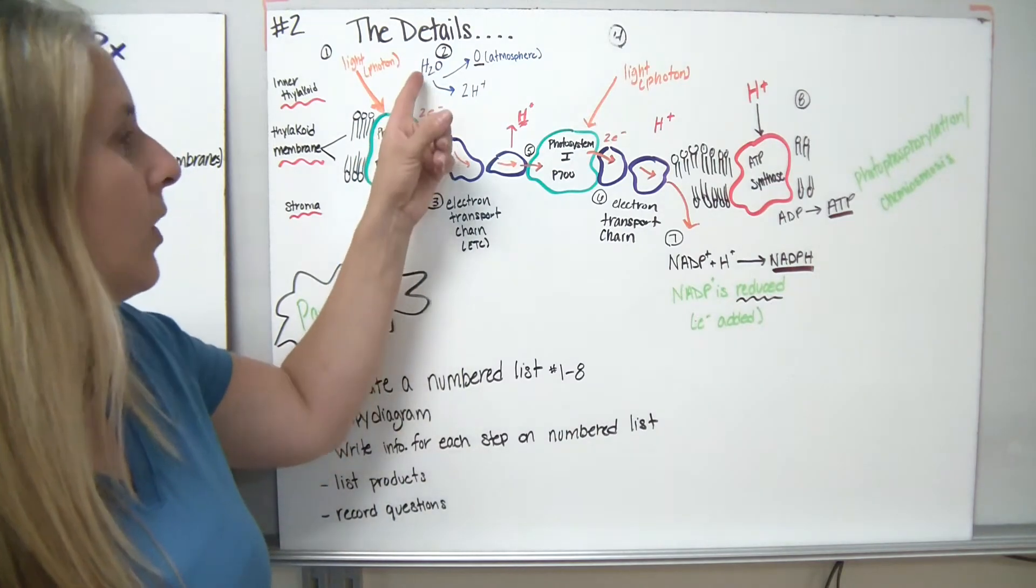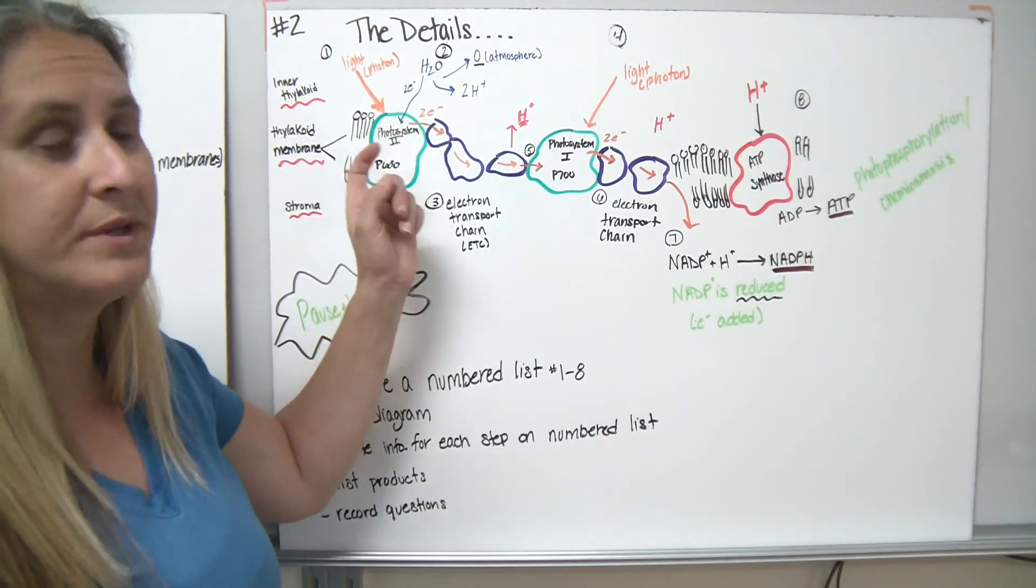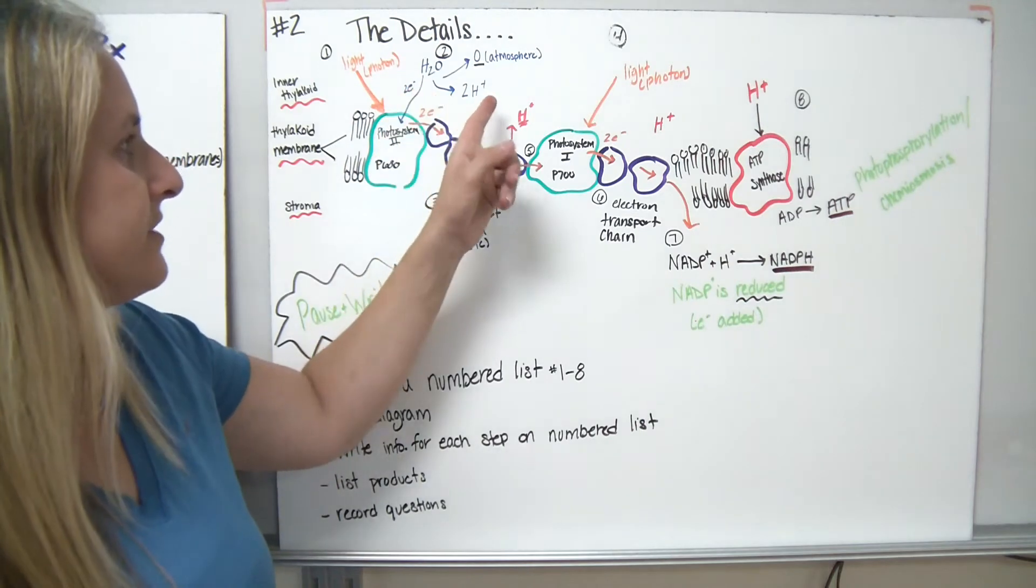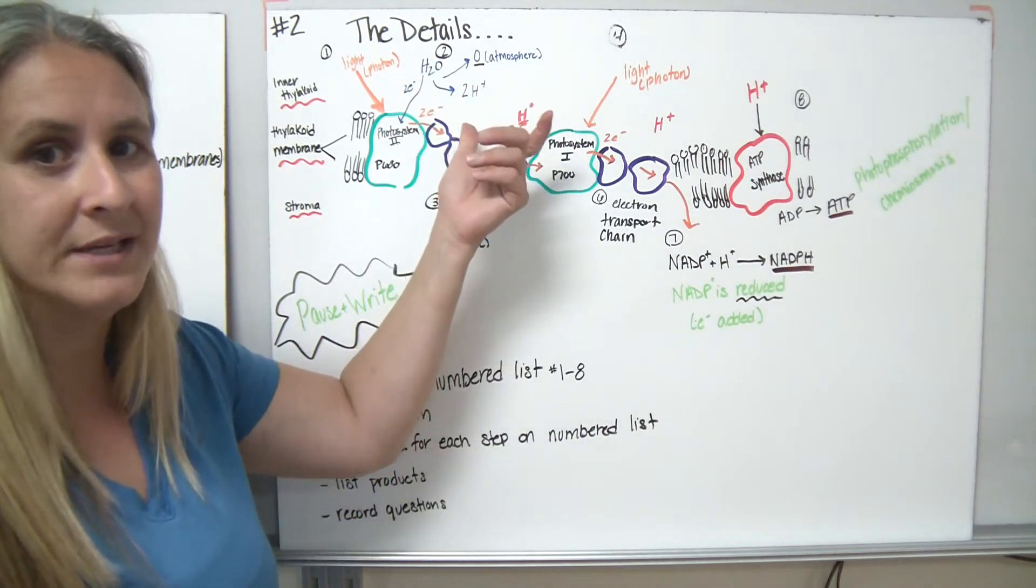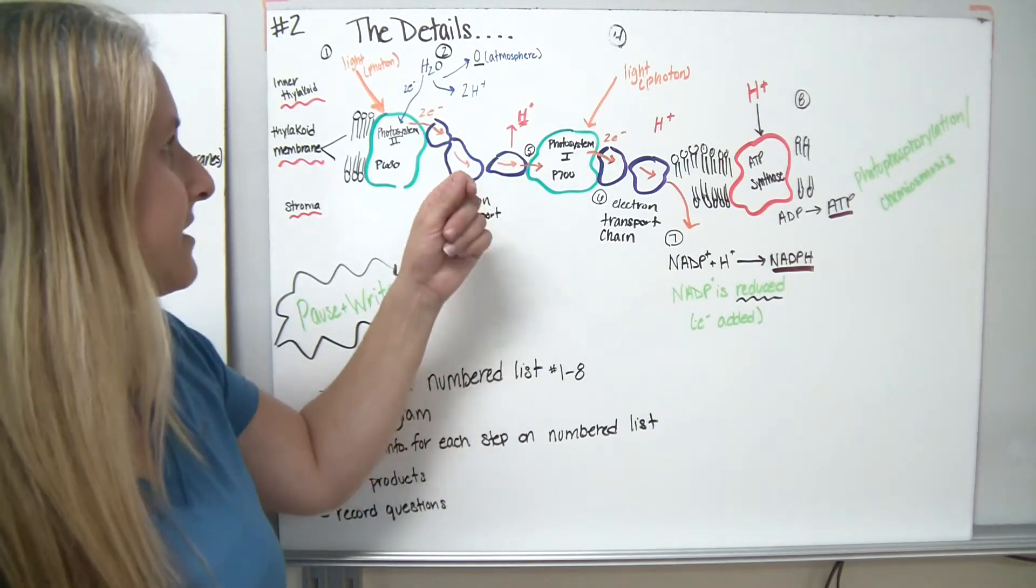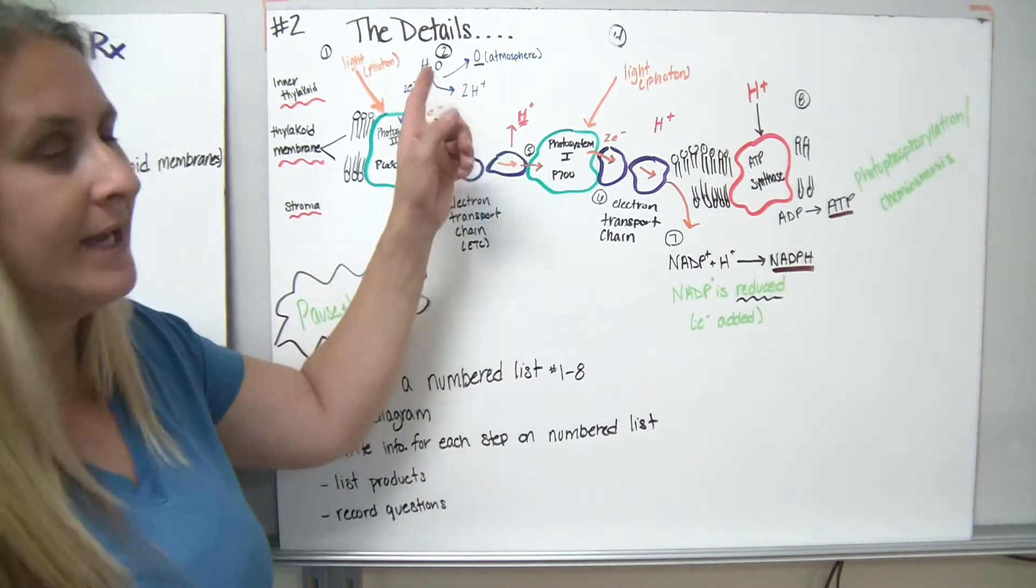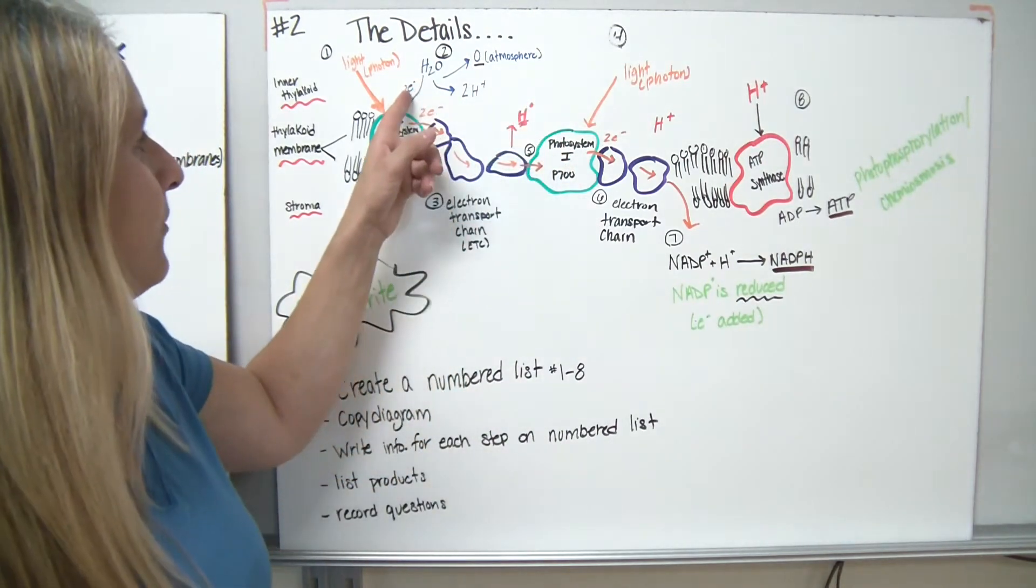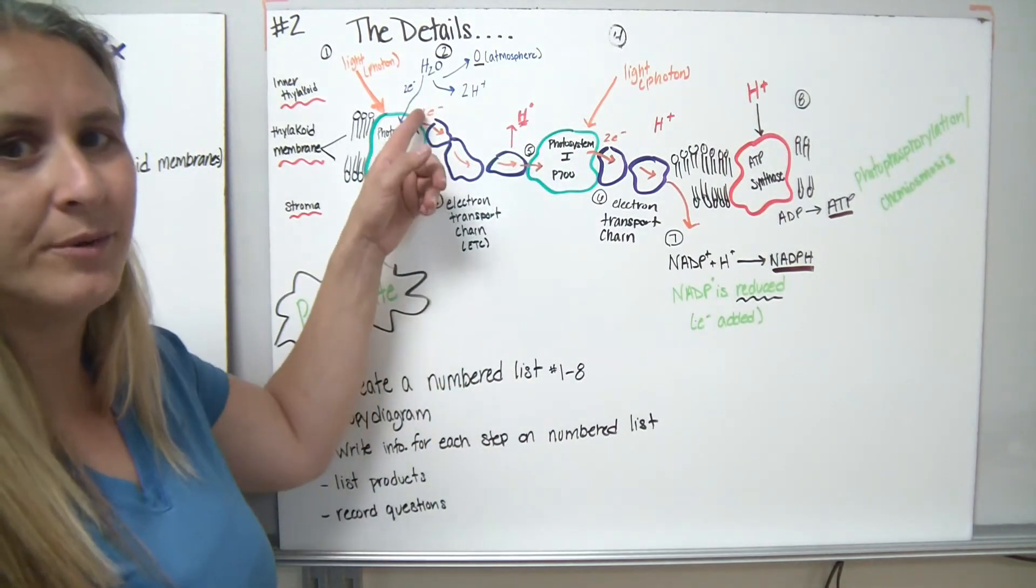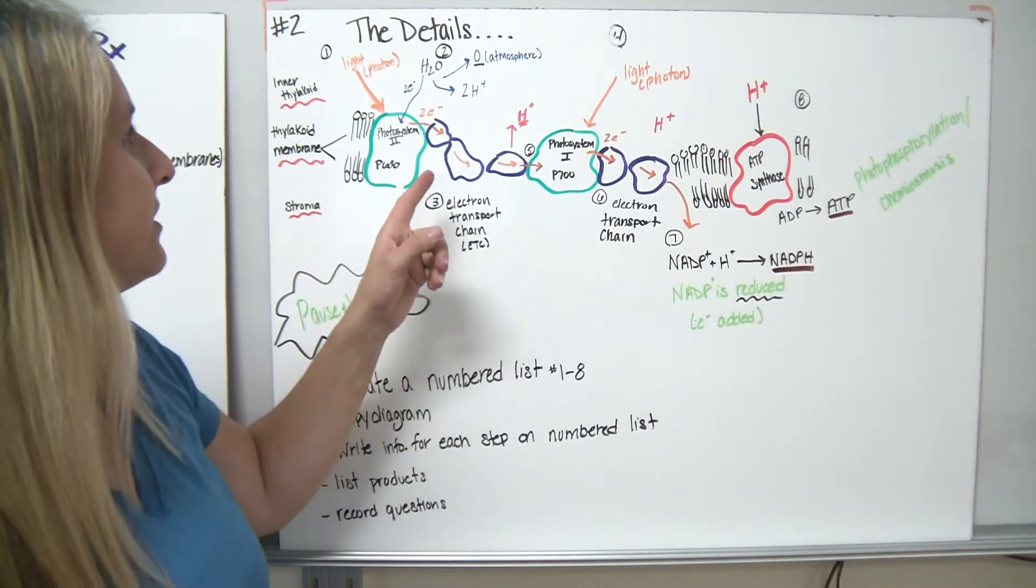As we're doing this, water is entering and we're splitting water apart. The hydrogens are going to go onto the inner thylakoid membrane to create a gradient. We've got a lot of pluses on this side. The oxygen is going to the atmosphere. So that's one thing that's getting produced and released. And we're going to have two electrons come in to replace the two electrons that are leaving.